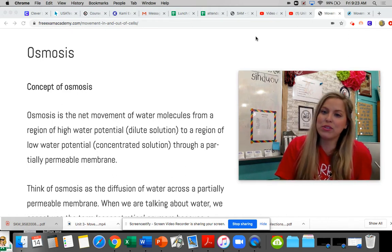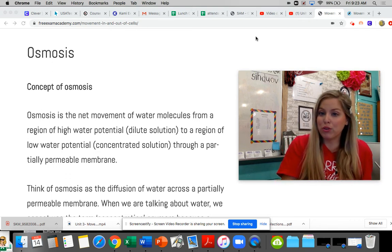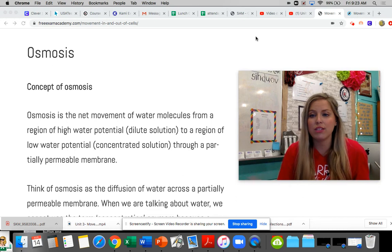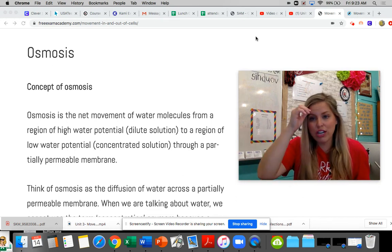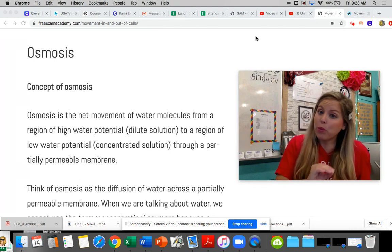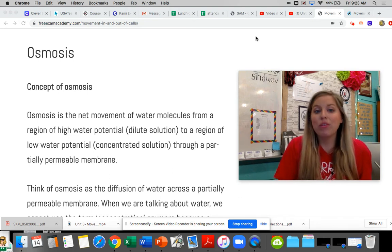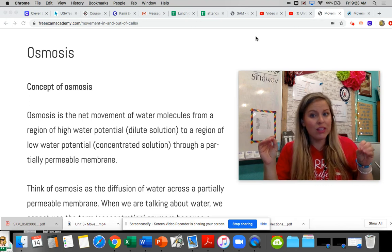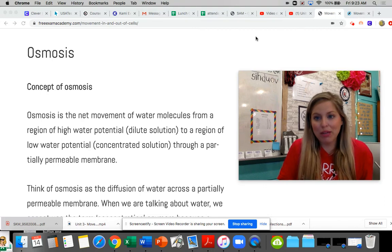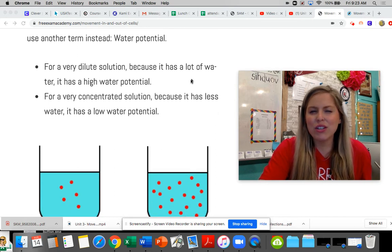But when we look at osmosis, what's important to note, where diffusion was dealing with molecules or particles that were diffusing across the cell membrane from an area of high concentration to an area of low concentration down the concentration gradient. Osmosis has a very similar definition, but it's dealing with water. So osmosis is the net movement of water molecules from a region of high water potential to a region of low water potential through a partially permeable membrane.